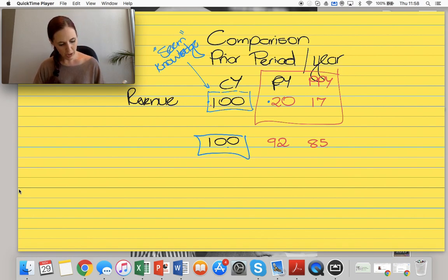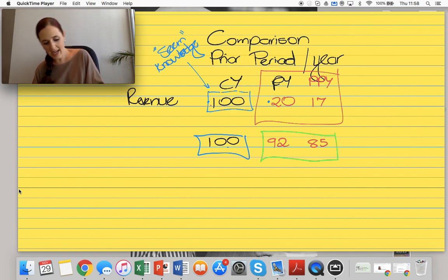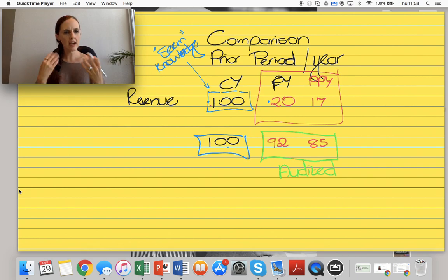I want you to be aware of the fact that these numbers have value because they have been audited. They've been audited. So I feel like I can rely a little bit more on the prior year's information because they were audited. So that's my base. That's the knowledge or the foundation that I have that I know is right.